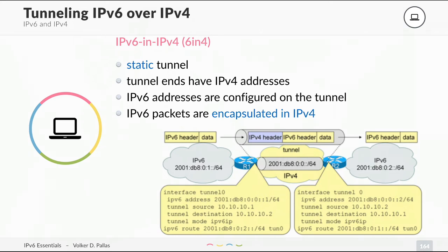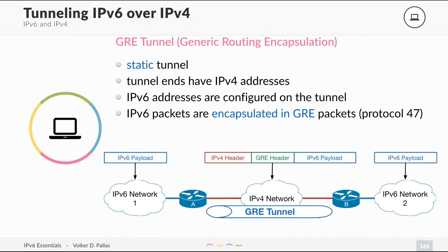Another option is a GRE tunnel, also available for IPv4. GRE stands for Generic Routing Encapsulation. It is also a static tunnel that needs to be configured on both ends. Both tunnel ends have IPv4 addresses, and on top of the tunnel you configure IPv6 addresses. The IPv6 packets are then encapsulated in GRE packets, which is IP protocol 47.